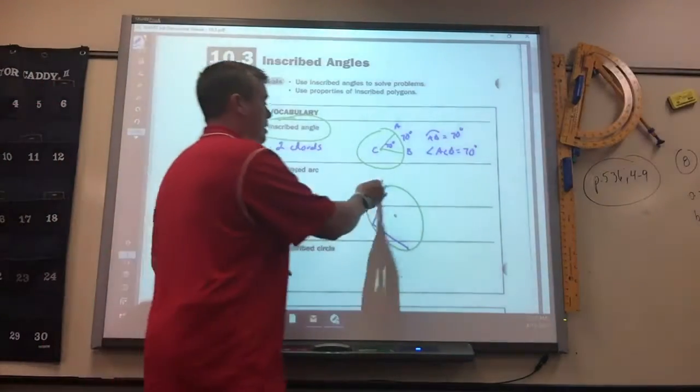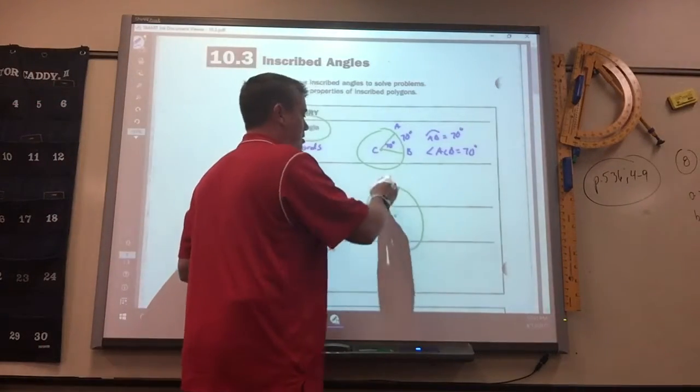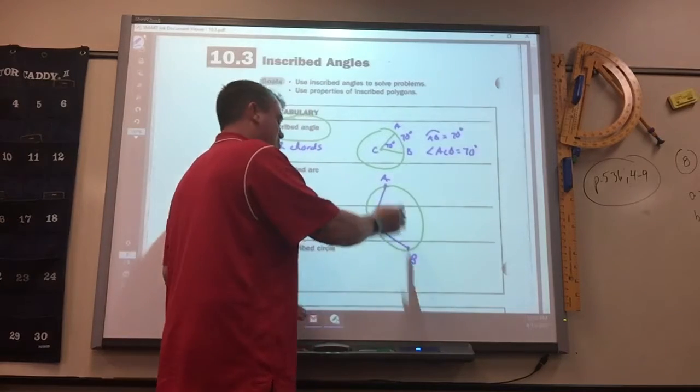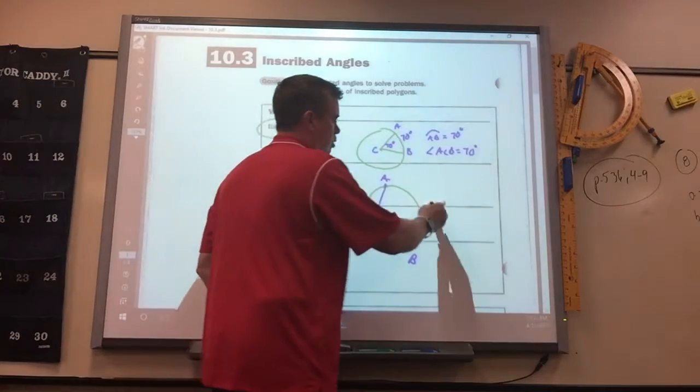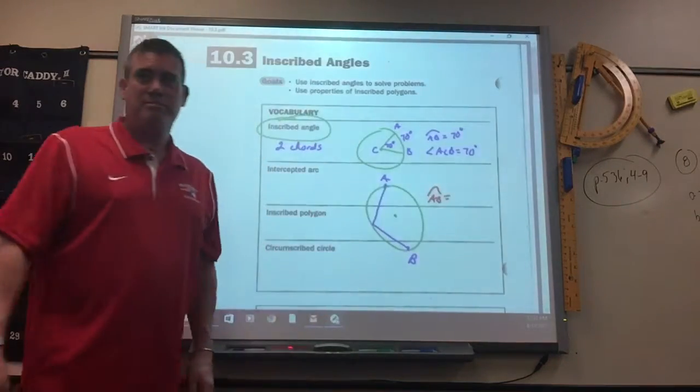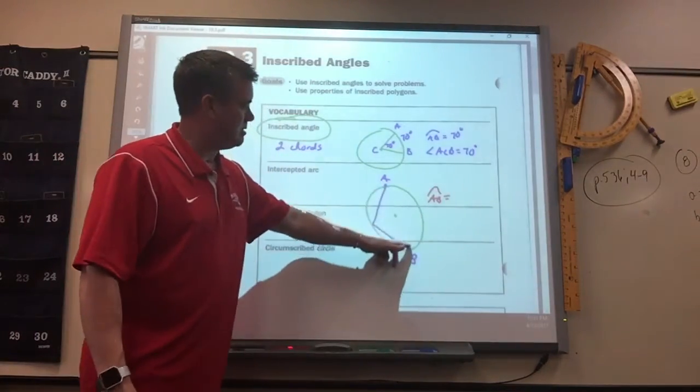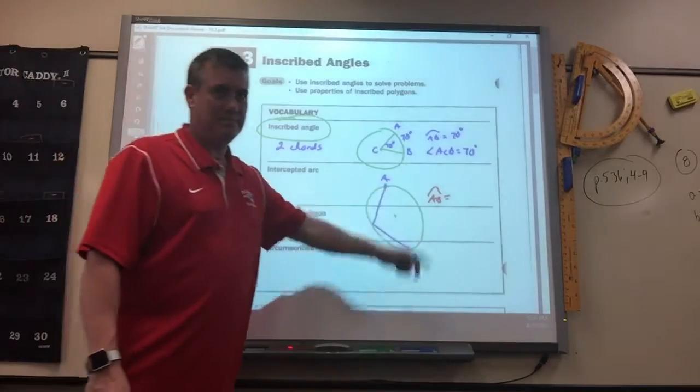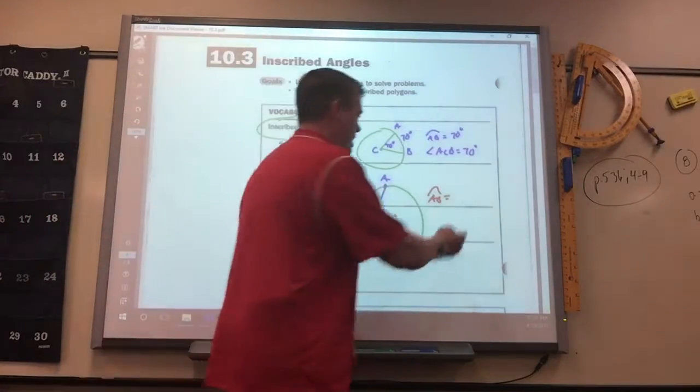Anyway, this inscribed circle intercepts at AB. So if you had to guess what arc AB was, a good estimate, what's the measure of that? 180. It's about a half a circle.